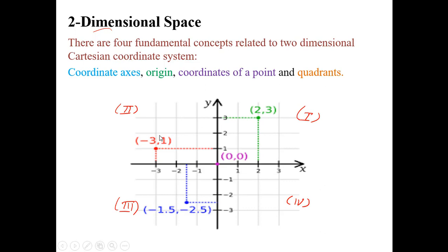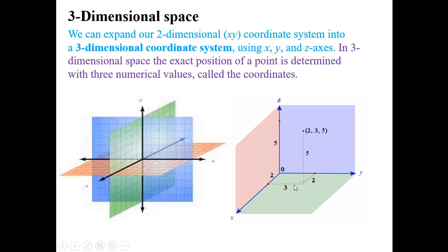If you have any line parallel to the x-axis, then all points on it have the same y-coordinate, and the x-coordinate will vary. Similarly, any line parallel to the y-axis will have the same x-coordinate for all points, while the y-coordinate varies. The equation of the y-axis is x = 0, and the equation of the x-axis is y = 0.